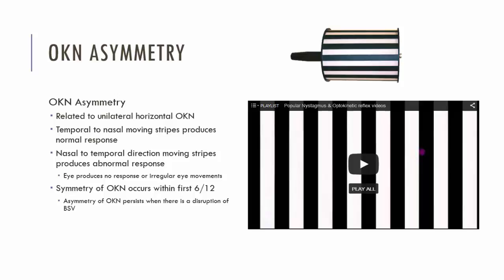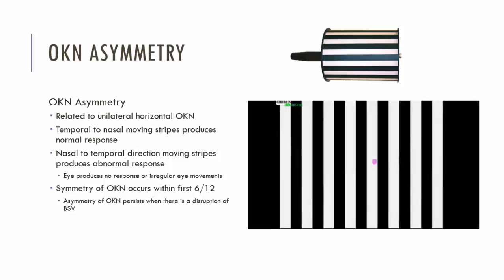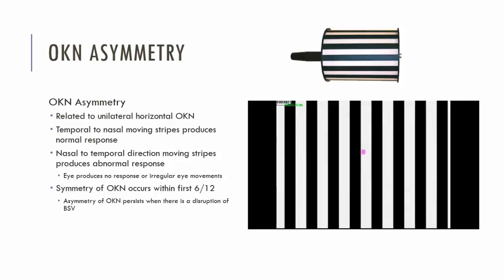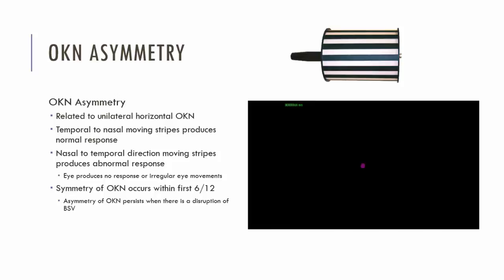Moving now to optokinetic nystagmus. In patients with an infantile esotropia, because the strabismus develops during a period where we develop symmetry of OKN, the disruption caused by the strabismus leads to asymmetric OKN. We assess OKN using something like the OKN drum. What we'll find is that when the stripes are moving temporal to nasal, we'll have a normal response. But when the stripes are moving nasal to temporal, there will be an abnormal response — either no OKN is observed, or an irregular type of OKN is observed.